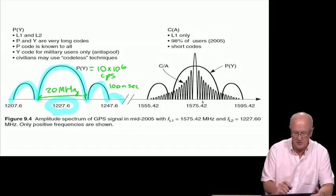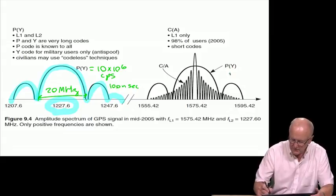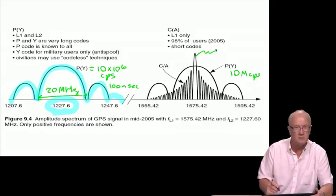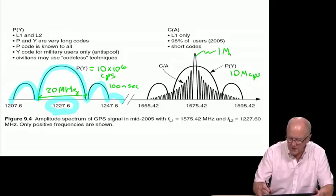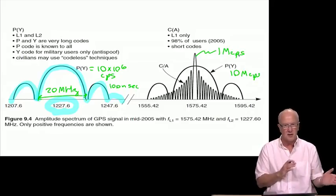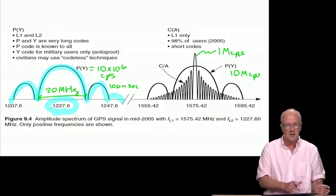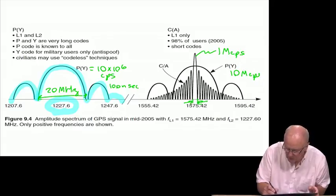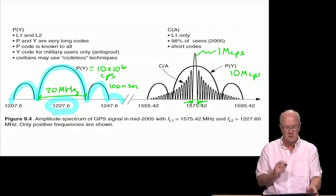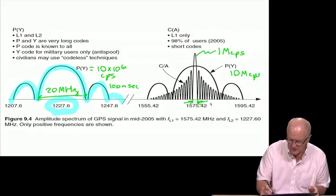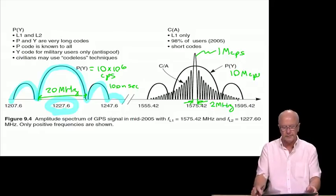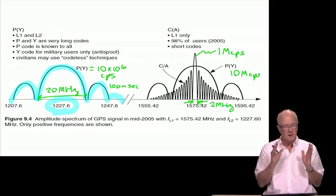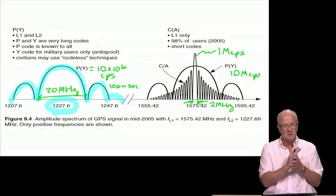At L1, the situation is more complicated. We have a military code there with the 10 mega chips per second, but we also have the civilian code with a chipping rate of only one mega chip per second. Because the chipping rate for the civil code is 10 times smaller, the null-to-null bandwidth is also 10 times smaller. It goes from 20 megahertz down to 2 megahertz. Those two spectra are superposed on top of each other, because those two signals are transmitted, broadcast simultaneously by the satellites.